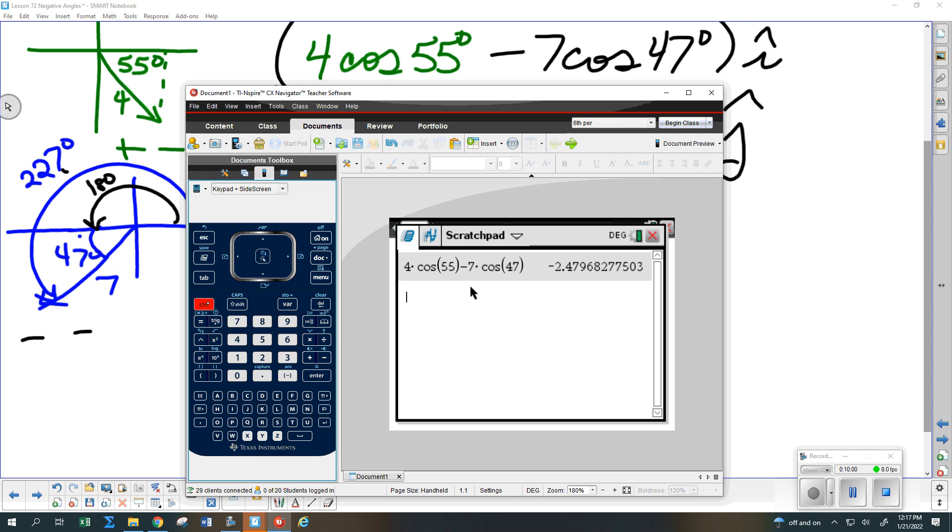Now I want you to store that so that the calculator will remember all of these extra decimal places. To do that, we do control, and then the variable button says STO up above it, so we hit that. This is i-hat, so I'm going to not be at all original. And I'm going to name it i. So I push the i, and then I push enter. Oops, what did I hit there that I didn't mean to? There, now I got the i in. So now the calculator will remember all of those digits.